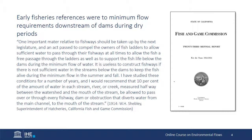The earliest reference I've found to the need for an in-stream flow comes from the California Fish and Game Commission report from 1914. In it, the superintendent of hatcheries, W.H. Shebley, calls for the state legislature to, quote, compel the owners of fish ladders to allow sufficient water to pass through their fishways at all times to allow the fish a free passage through the ladders, as well as support the fish life below the dams during the minimum flow of water. He recommends that the required flow releases be equivalent to 10% of the amount of water in each stream, river, or creek measured halfway between the watershed and the mouth of the stream.